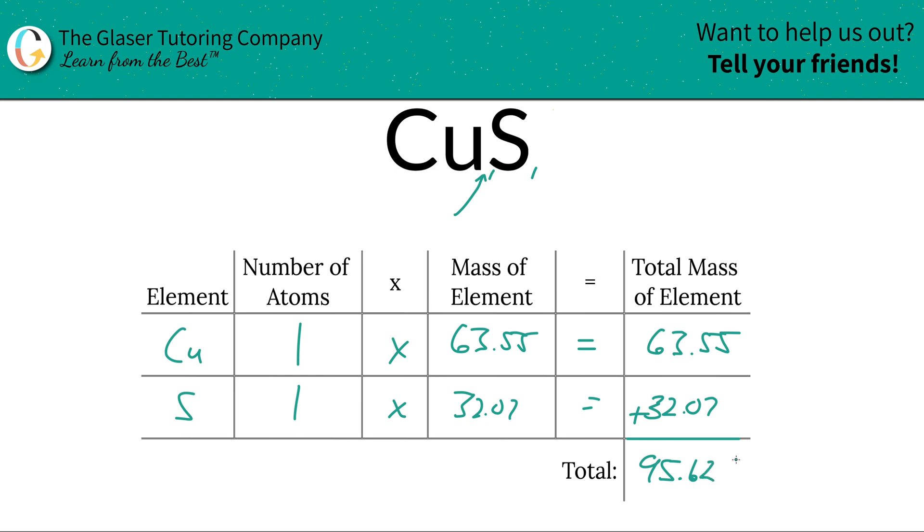Since we're solving for molar mass, the units are in grams per mole. That's all there is to it. Now you know how to find the molar mass of copper 2 sulfide.